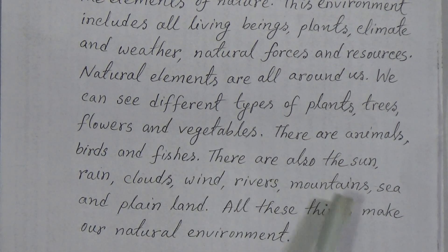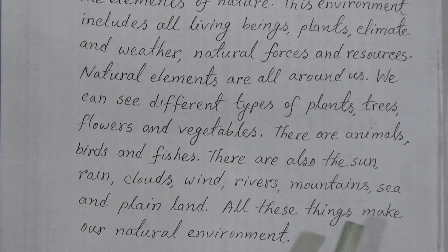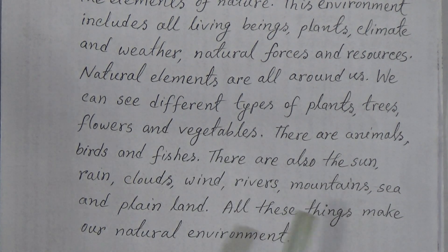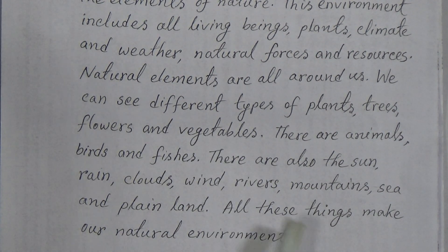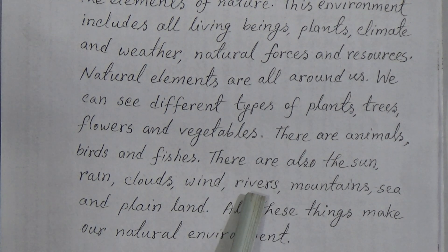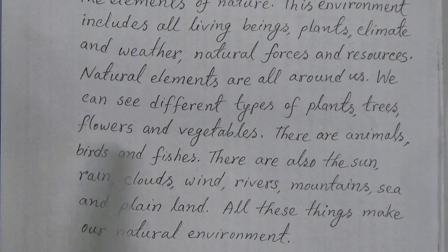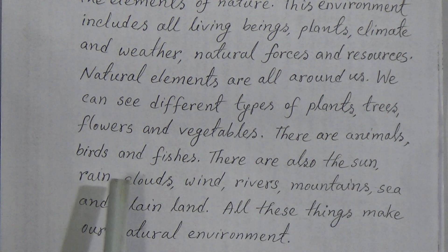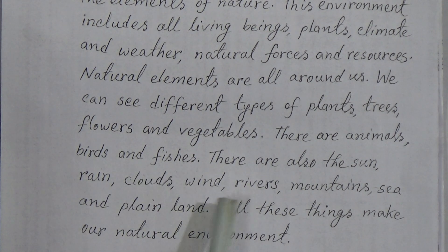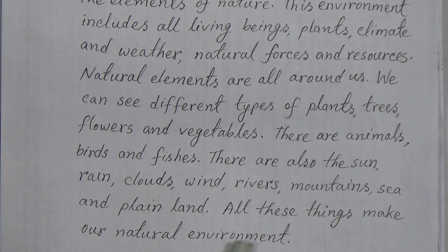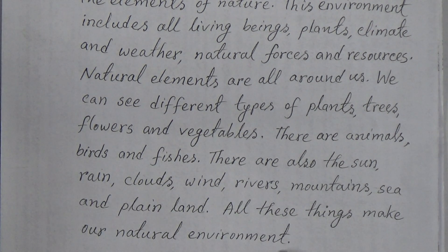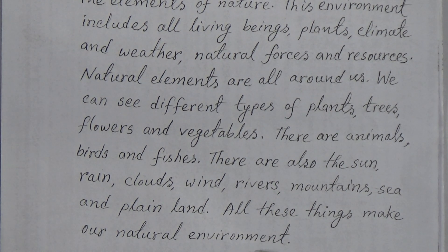Natural environment is called so because we can see examples like the sun, rain, clouds, wind, rivers, mountains and plain land — all these are called the elements of natural environment.